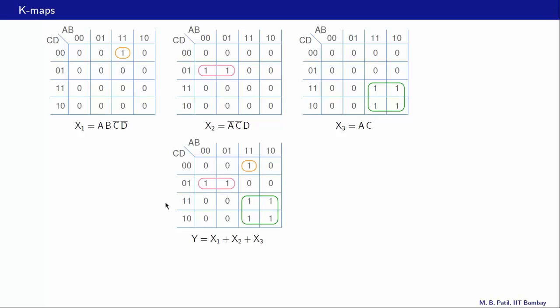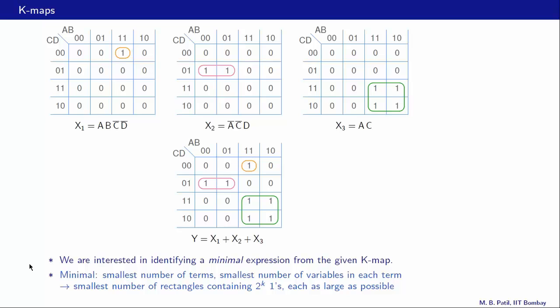Now consider a function y which is the sum — the OR operation — of x₁, x₂, and x₃. What will the map of y look like? y is one if x₁ is one, or x₂ is one, or x₃ is one. So all we need to do is look at the positions of ones in these three maps and replicate those ones in the map for y. This one goes here, these two ones go here, and these four ones go here — that gives us the map for y.